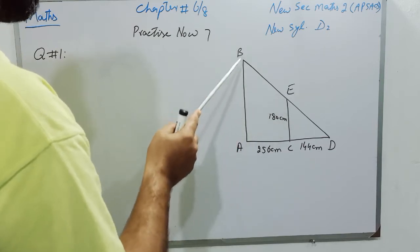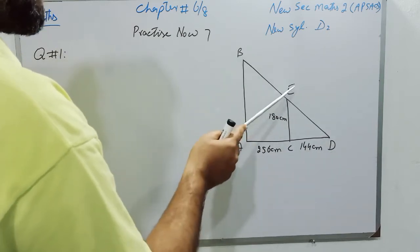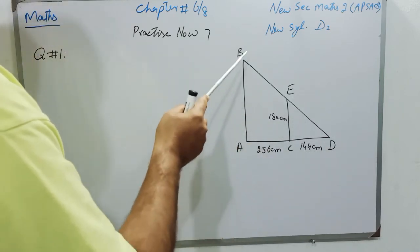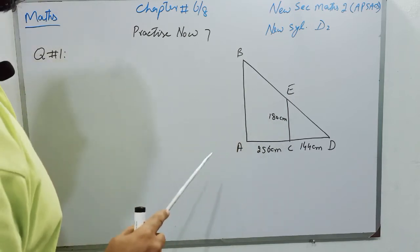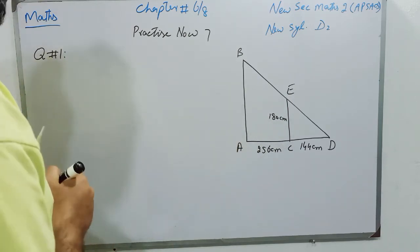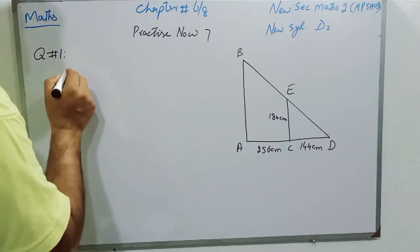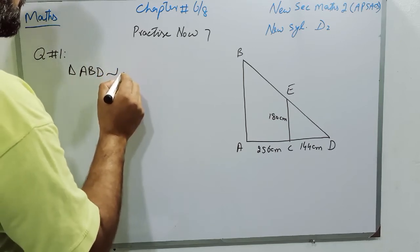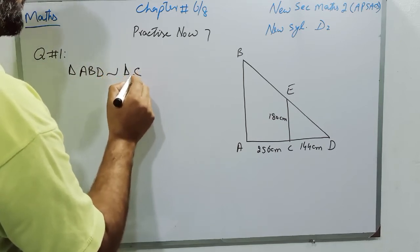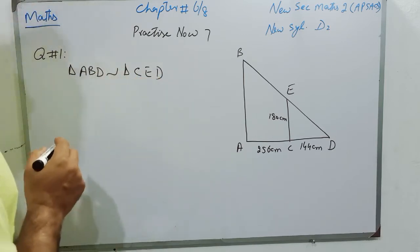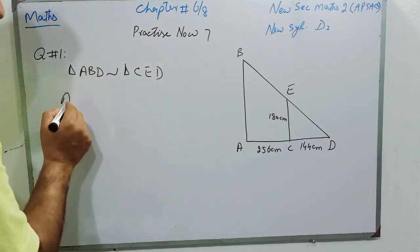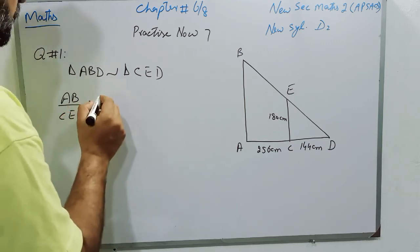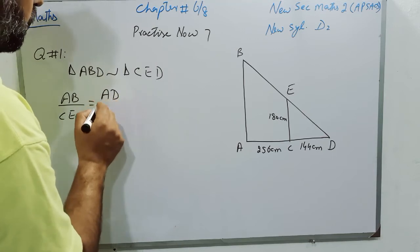So triangle BAD and triangle ECD are both similar. We know very well that the corresponding sides of similar triangles are proportional. So first I will write triangle ABD is similar to triangle CED.